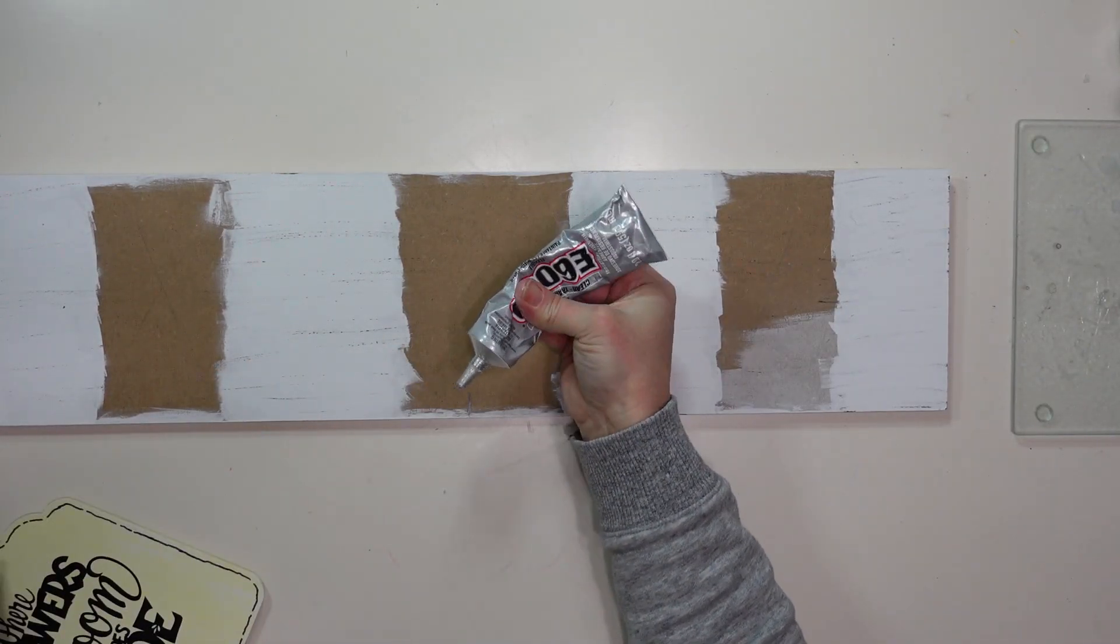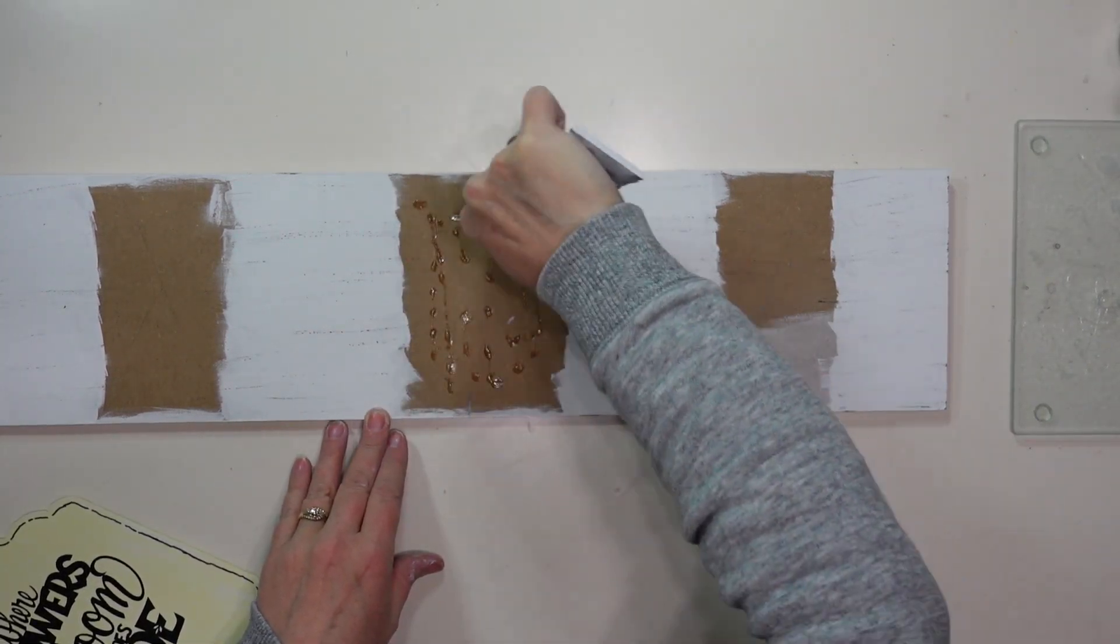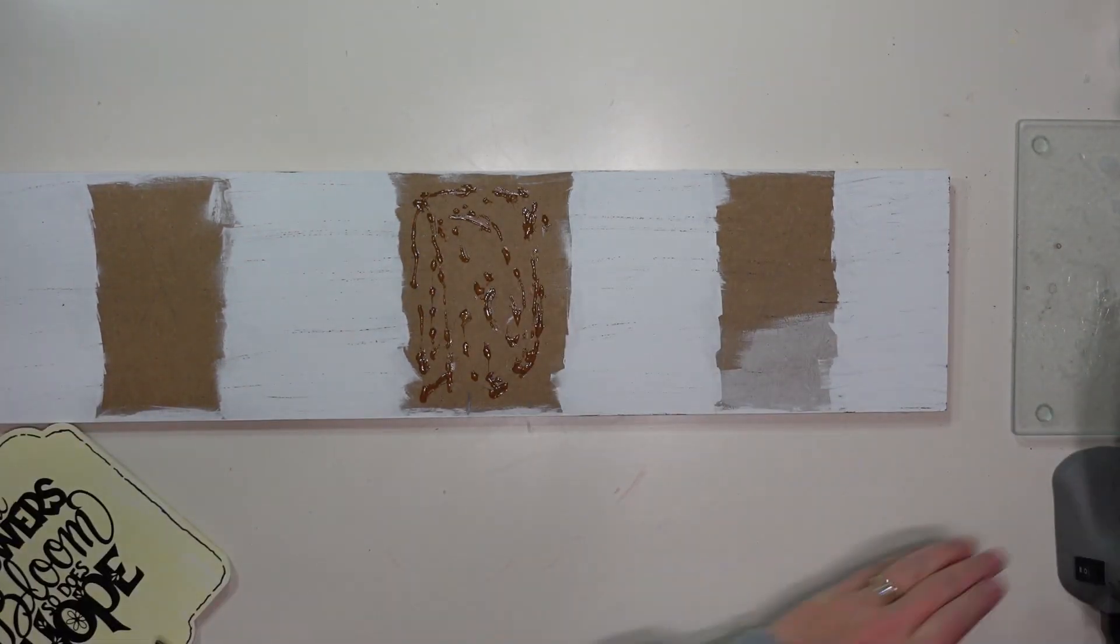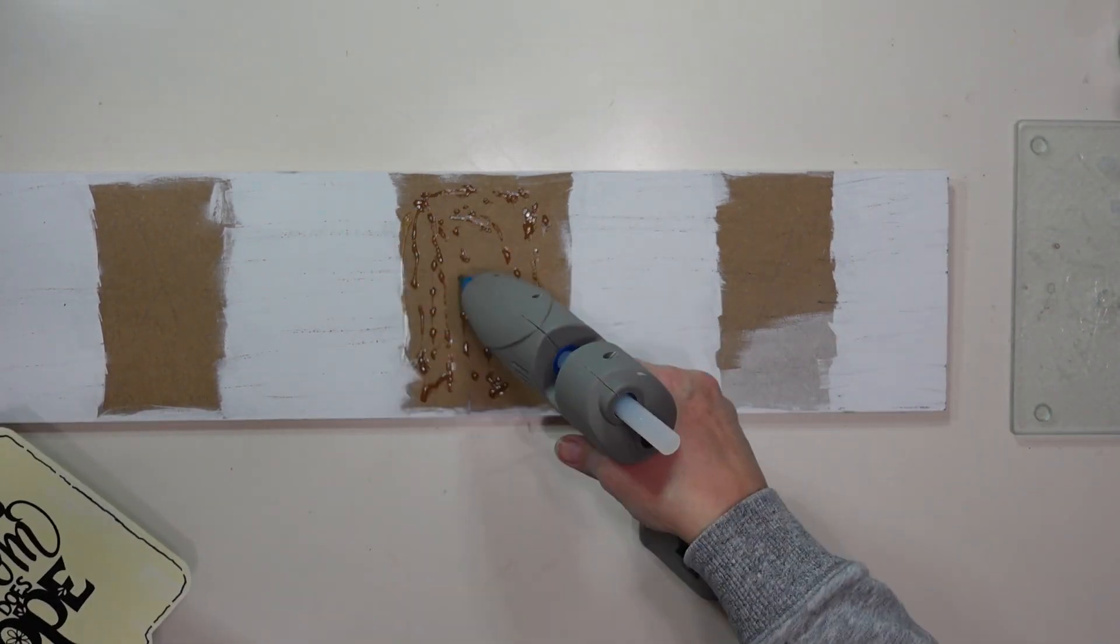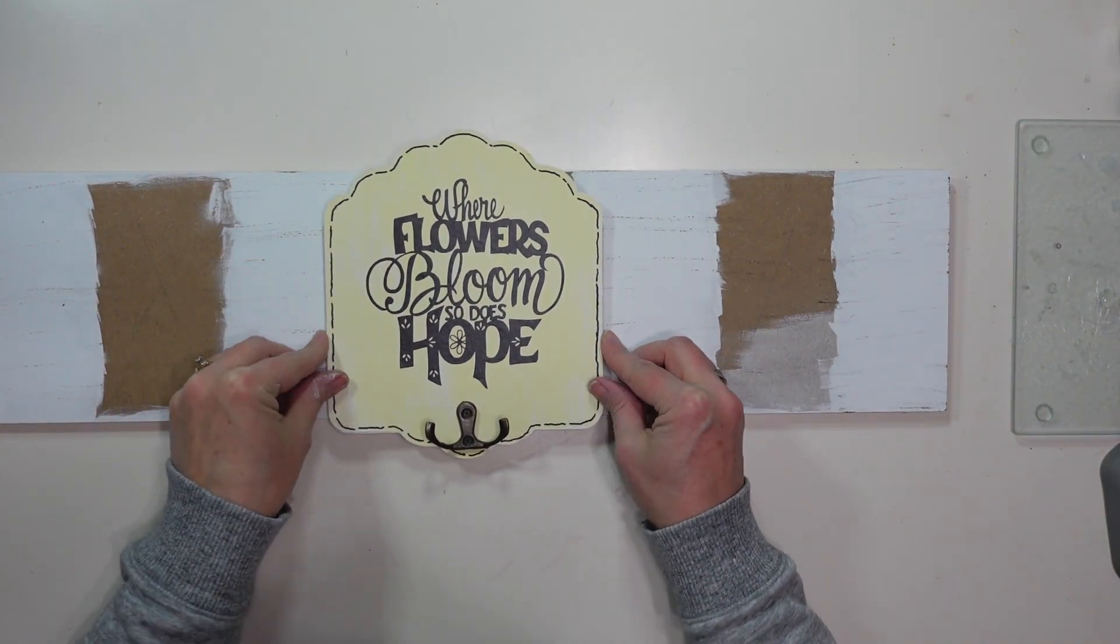Next I'm going to use some E6000 to glue these signs to my backing and I'm also going to use a little bit of hot glue just so that they will adhere right away while that E6000 is drying.